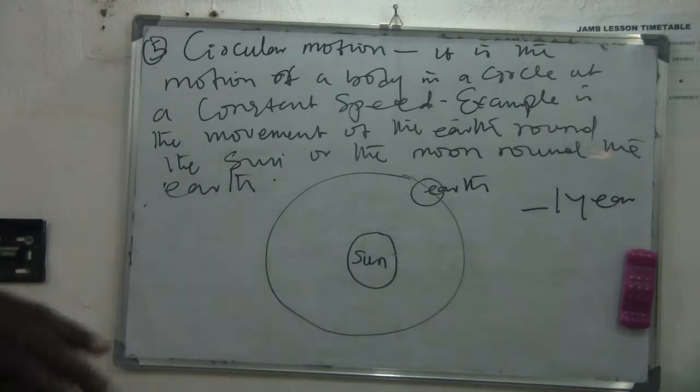Whereas that motion around the sun at a constant speed is known as what? Circular motion.